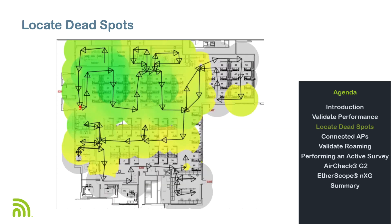By connecting to a specific Wi-Fi network, dead spots and coverage issues can quickly be located. If the analyzer is unable to receive a strong enough signal from the nearest access point to maintain a connection, that data point will be shown as a dark circle on the heat map. This is a quick visual indication of a lack of coverage at that location or roaming problems.